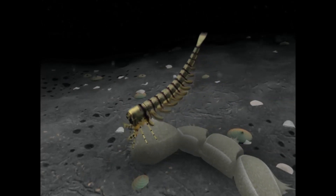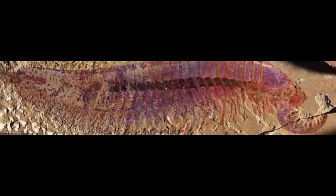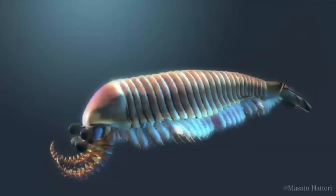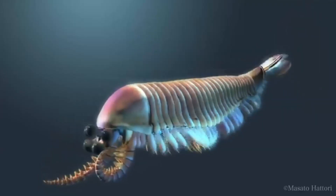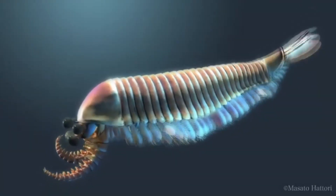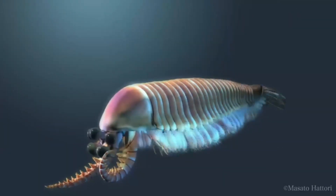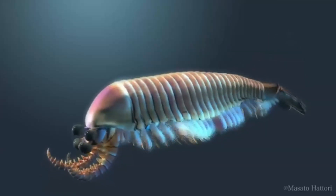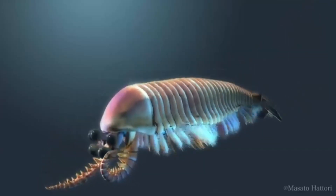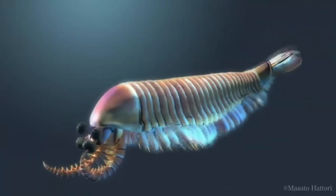A new fossil was found in China. The arthropod Chengjiania had a radiodontan first appendage with jointed limbs following them. Chengjiania fits perfectly, diverging out of the radiodontans and being the point where the deep split occurred, separating crustaceomorphas and arachnomorphas.